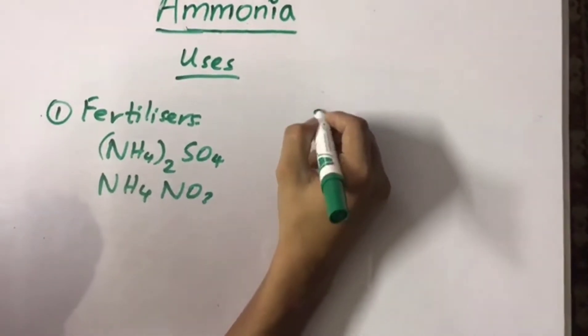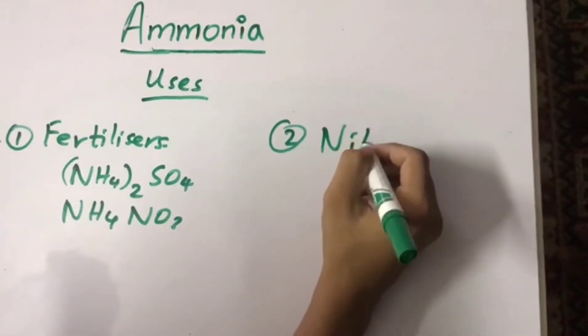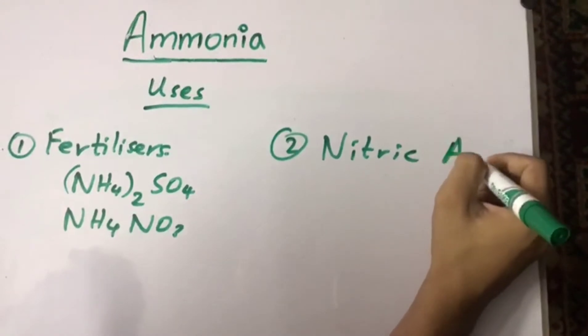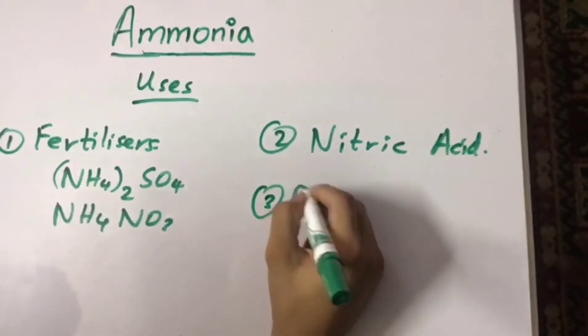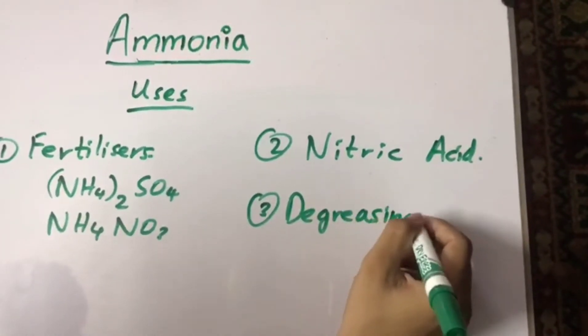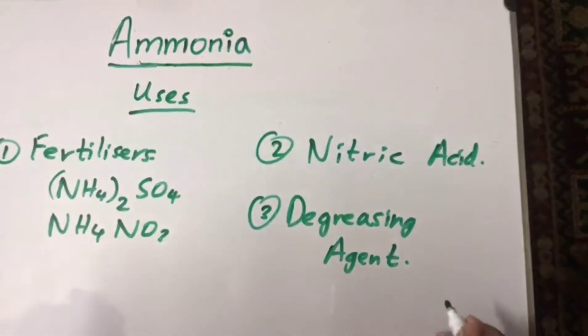Other than fertilizers, ammonia is used to produce nitric acid, because oxidation of ammonia produces oxides of nitrogen. And third, ammonia is used as a degreasing agent as it dissolves grease.